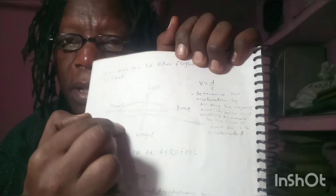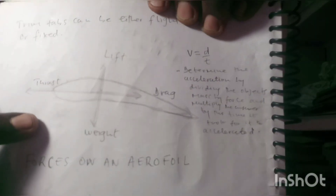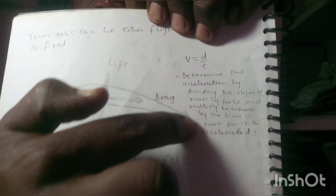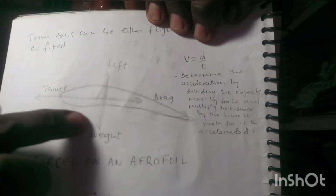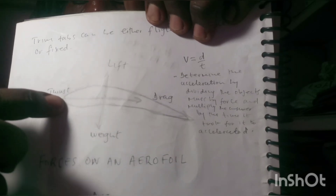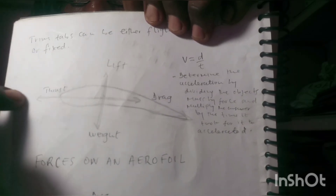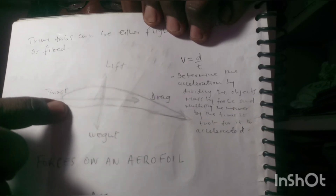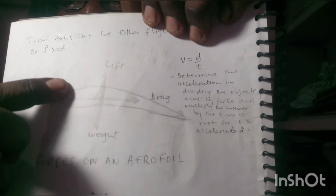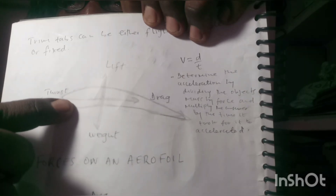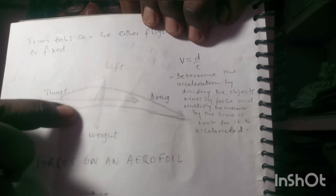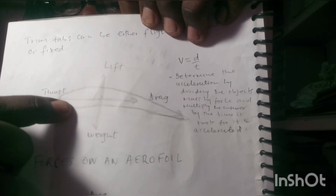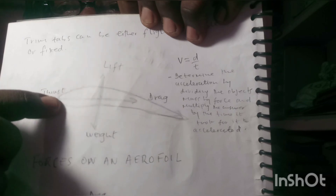We can draw a reference line on the airfoil. At the point where the air is coming in against this reference line, an angle is formed which we call the angle of attack. If the reference line is like this and the air is coming in at an angle, that angle formed between them is the angle of attack.